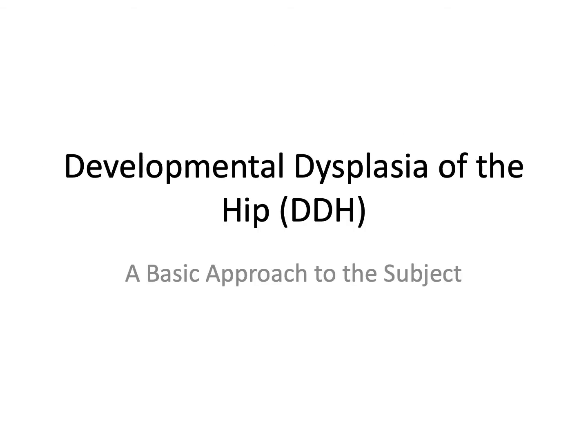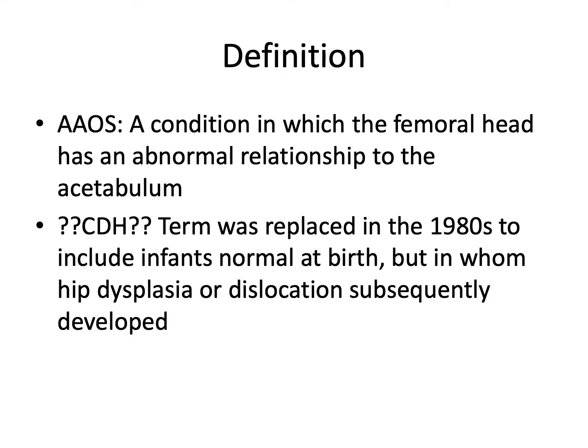Let's start with developmental dysplasia of the hip, or DDH. The American Academy of Orthopedic Surgeons defines DDH as a condition in which the femoral head has an abnormal relationship to the acetabulum. An older name of the same problem was CDH, or congenital dislocation of the hip, which was replaced in the 80s to include hips that are normal at birth and in which dysplasia or dislocation subsequently develop.